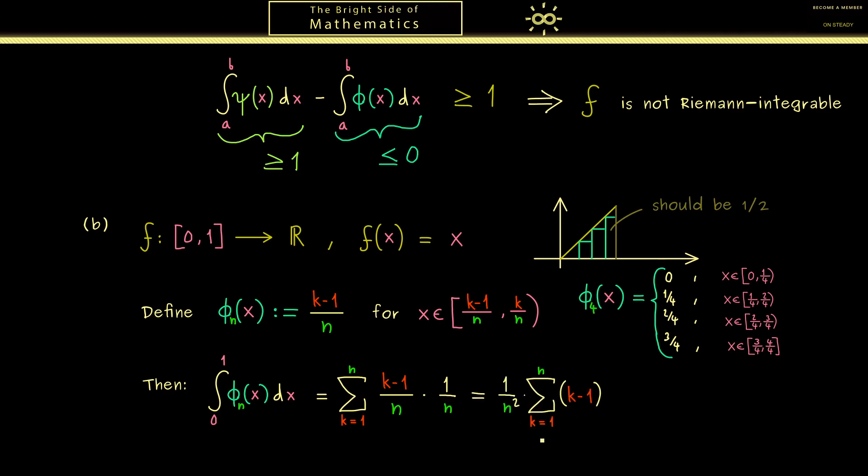Here you see we have 1 over n squared which we can pull out of the sum. And then you see the only thing we have to calculate now is the sum of the first n-1 integers. And there we can use something some people call the little Gauss formula. In this case here it's n times (n-1) divided by 2.